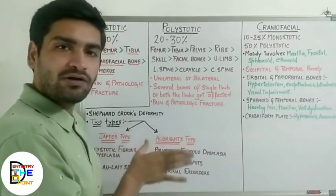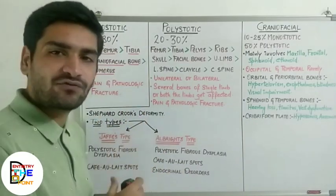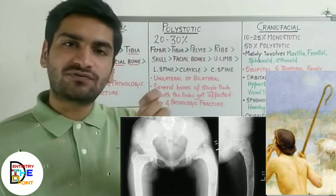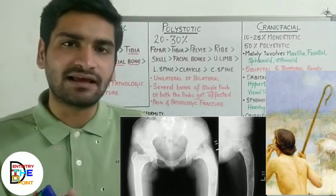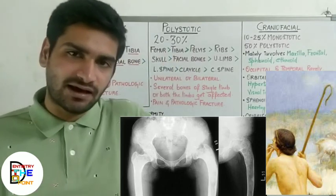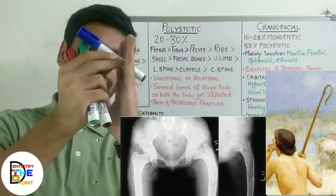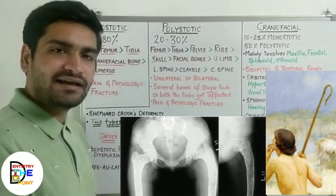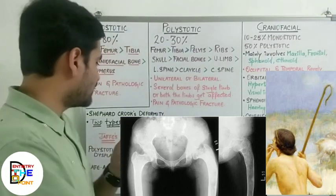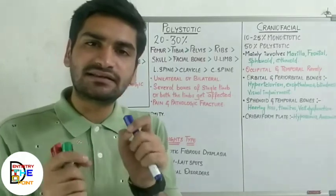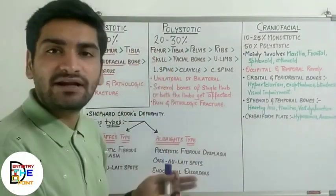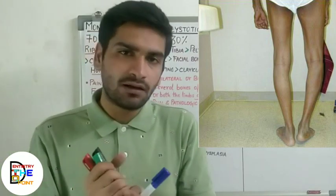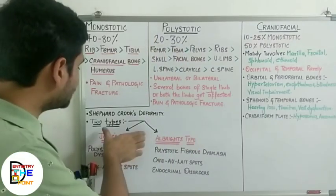In polystotic fibrous dysplasia, if the lower limb is involved — particularly the femur — it will show a shepherd's crook deformity. This deformity refers to a remarkable increase in the curvature of the neck and shaft of the femur. Additionally, weight-bearing bones will show bowing — they become bow-shaped due to the structural weakness caused by replacement of medullary bone with fibrous tissue.